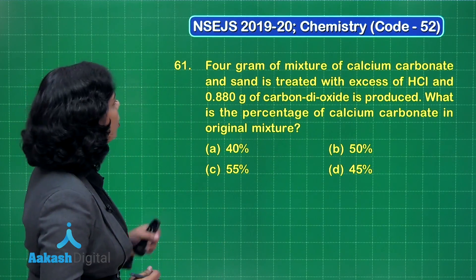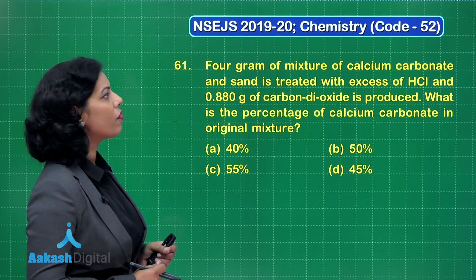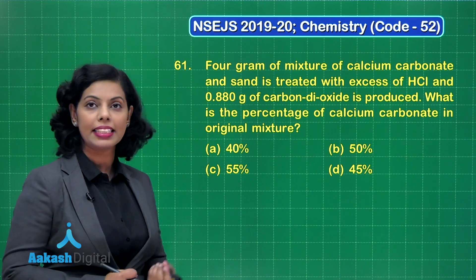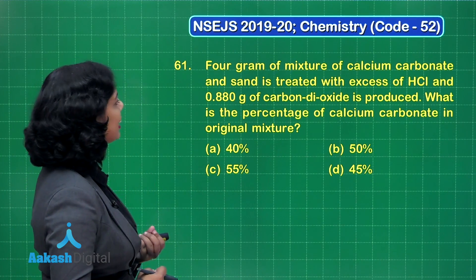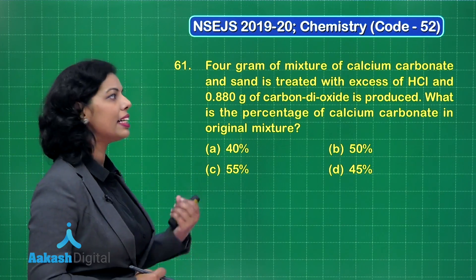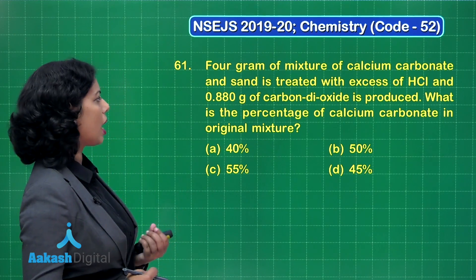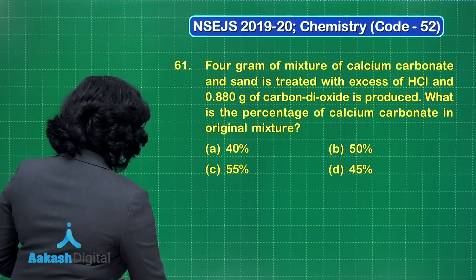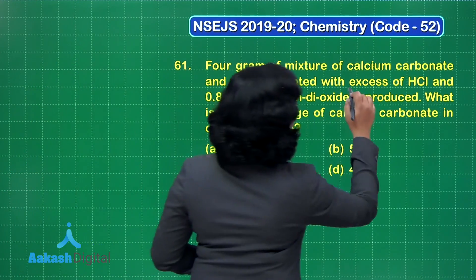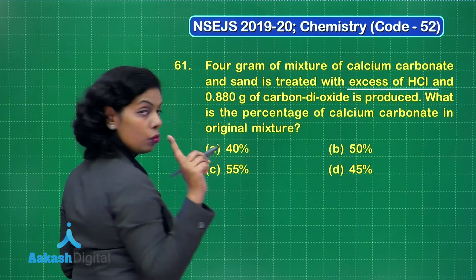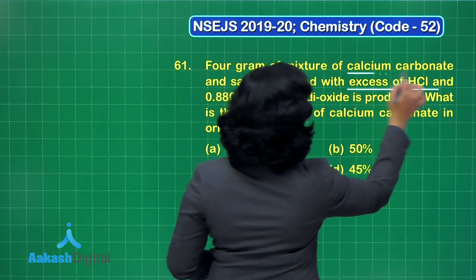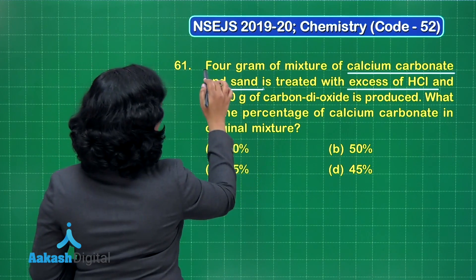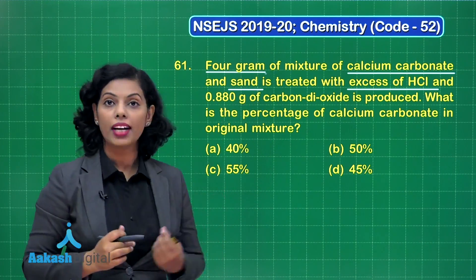Let's study question 61. 4 grams of a mixture of calcium carbonate and sand is treated with excess of HCl, and 0.880 grams of carbon dioxide is produced. What is the percentage of calcium carbonate in the original mixture? A very important thing given here is that there is excess of HCl. The amount of the mixture is 4 grams.